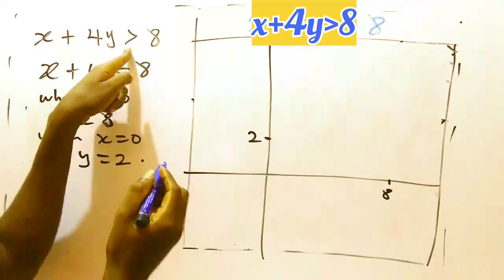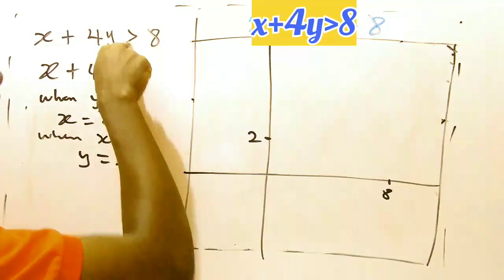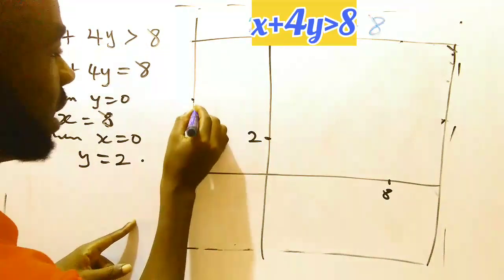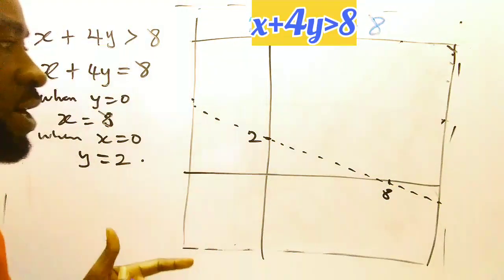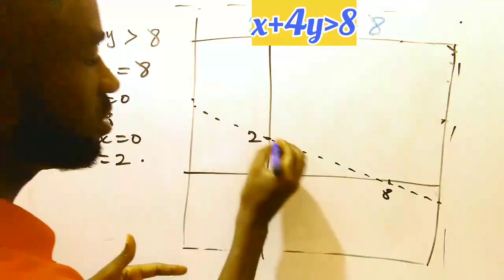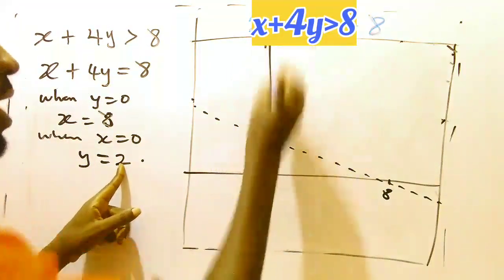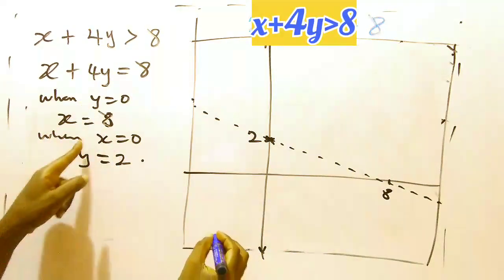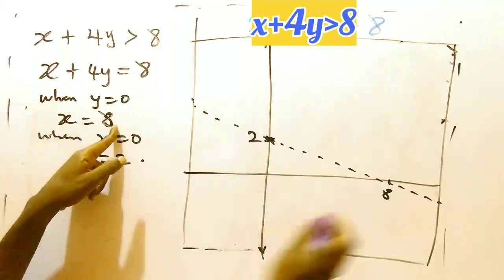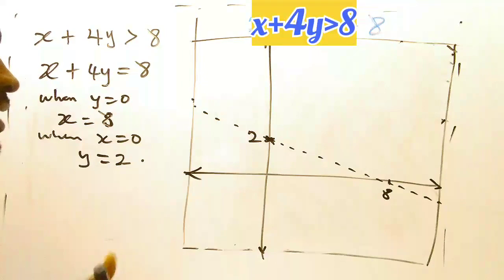So next, you check your inequality here. It's greater than. Greater than, again, it is a broken line to join the two points. Remember, use your ruler to do that. It's not freehand. So I'm joining these two points where y is 2. This is my y axis, and x is 8. So this is my x axis, and y is 2.